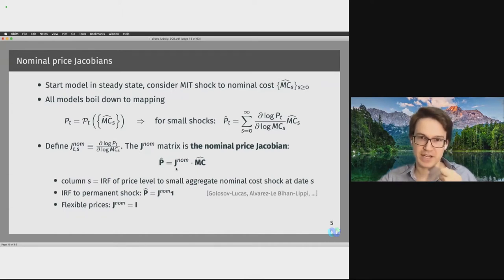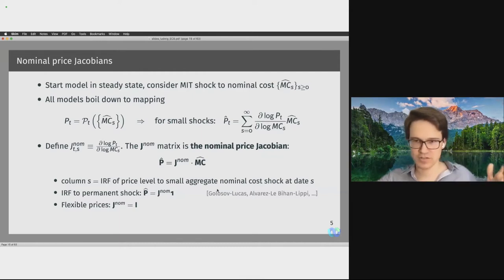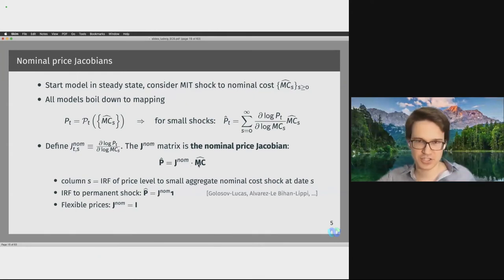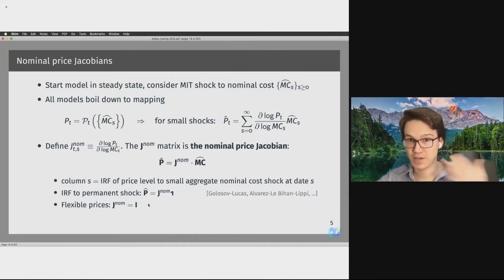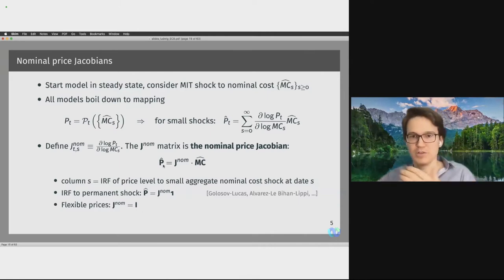Intuitively, column S of that matrix corresponds to the impulse response of the aggregate price level to a small aggregate nominal cost shock that hits at date S, known at date zero. For example, looking at the Calvo model's nominal price Jacobian, column 20 shows the impulse response is highest in the quarter of the shock, but already rises in anticipation. After the shock is over, we fall back towards the steady-state price level. In the special case of flexible prices, this nominal price Jacobian corresponds to an identity matrix, since the change in aggregate prices always equals the change in nominal marginal cost in every period.